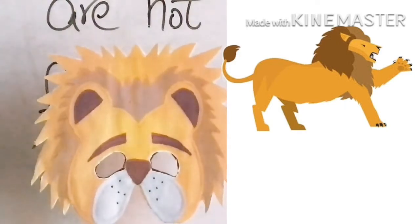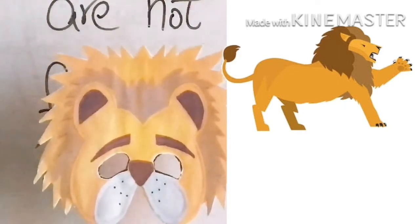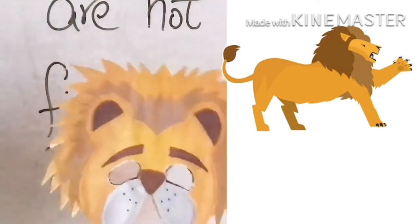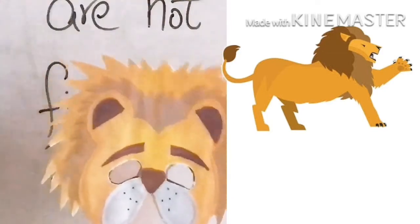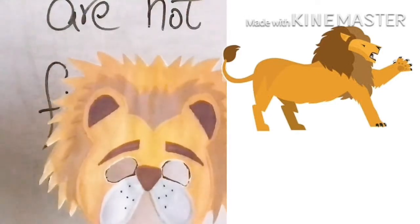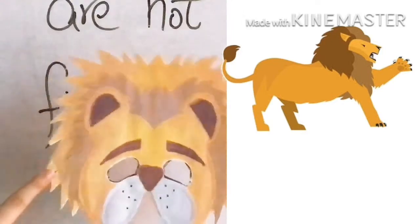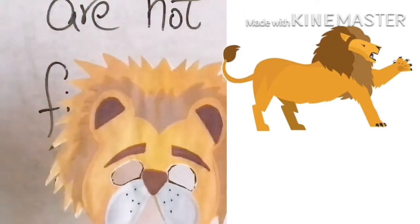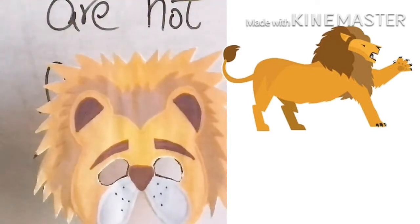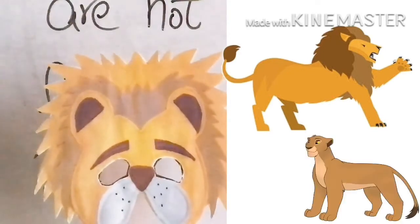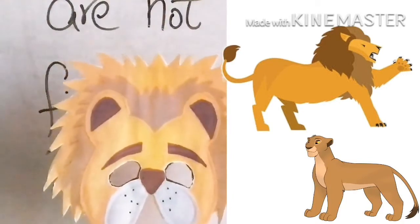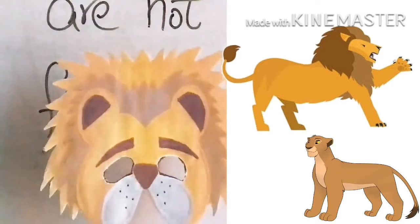Lion, mighty and strong, with a very loud roar and a mane so long. Mane kisko kehte hai? Jo long uske hairs hoti hai na, usko kehte hai. Aur aapko pata hai, jo lion ki jo female hoti hai na, usko kya kehte hai? Lioness. A lioness has no mane. Jo female lioness hoti hai na, uske koi hair nahi hoti hai.